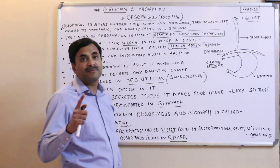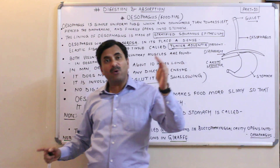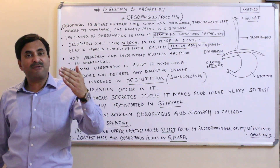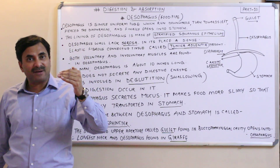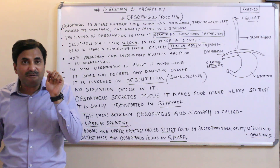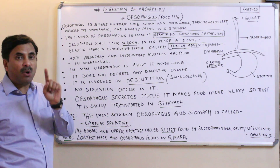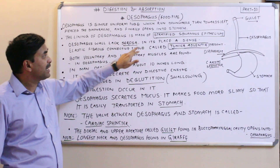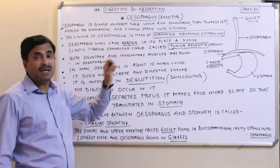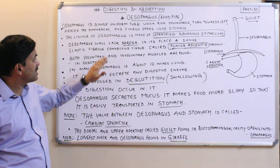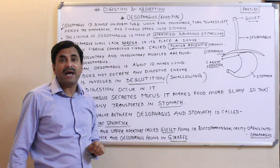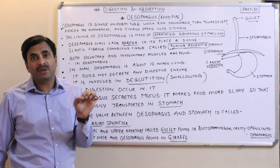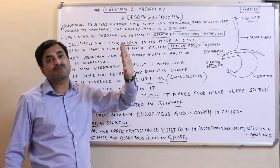When studying the histology of the alimentary canal, we examine layers from outside to inside: the serosa, then the muscularis layer, then the submucosa, then the mucosa. However, in the esophagus, the serosa is absent. In place of the serosa, there is a dense elastic fibrous connective tissue layer called the tunica adventitia.